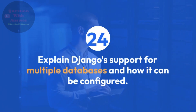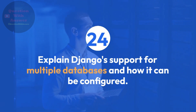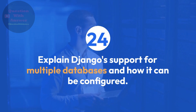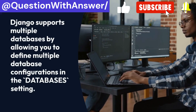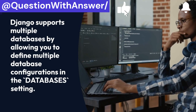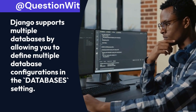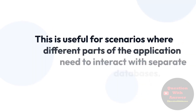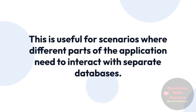Question 24: Explain Django's support for multiple databases and how it can be configured. Answer: Django supports multiple databases by allowing you to define multiple database configurations in the DATABASES setting. Each model can then specify which database it belongs to using the using attribute. This is useful for scenarios where different parts of the application need to interact with separate databases.